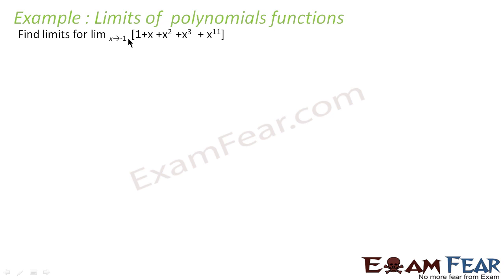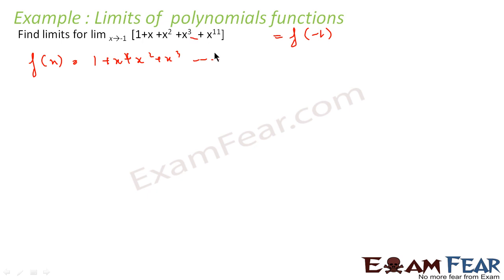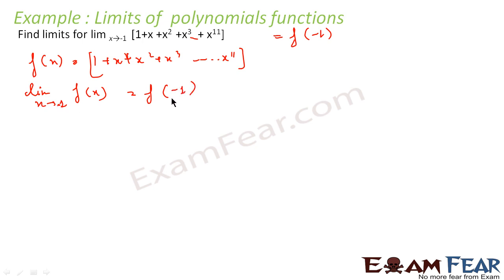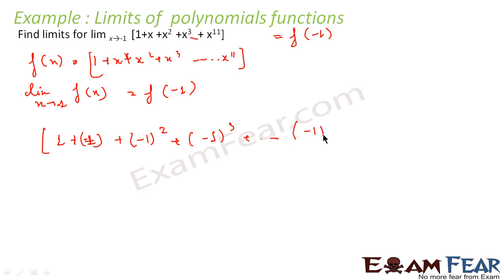We'll take one more example. Here we have to find the limit as x tends to minus 1. So this will be nothing but f(minus 1). If f(x) equals 1 plus x plus x² plus x³ plus dot dot dot plus x to the power 11, then the limit as x tends to minus 1 of f(x) is nothing but f(minus 1). So we have to find the value of f(minus 1), that is: 1 plus (minus 1) plus (minus 1)² plus (minus 1)³ dot dot dot plus (minus 1) to the power 11.